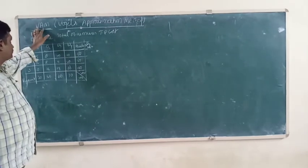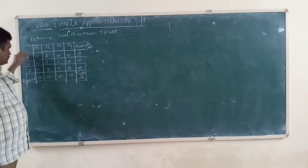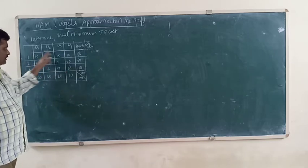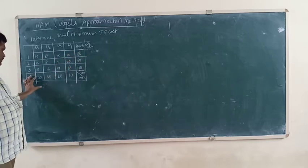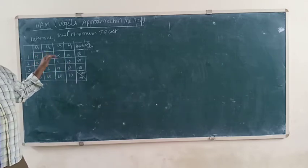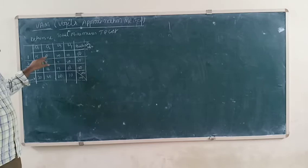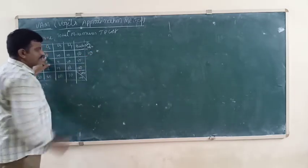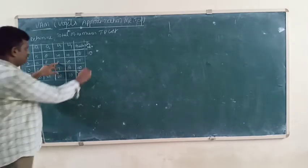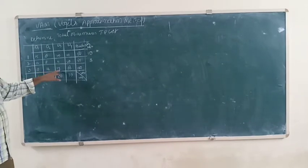Now, going back to the first step: for each row, identify the transportation cell values. For the first row, find the first minimum and second minimum values, then calculate the difference (penalty). Here the first minimum is 0 and the second minimum is 10, so the difference is 10 minus 0 equals 10. For the next row, first minimum is 8 and second minimum is 11, so the difference is 3.